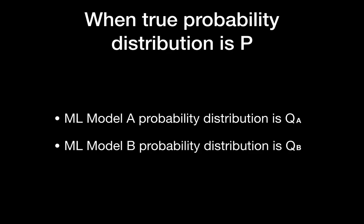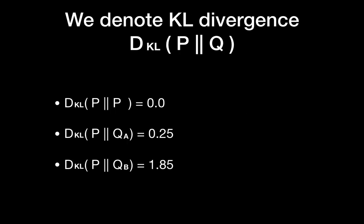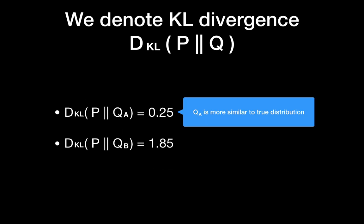Let's denote the true label probability distribution as P and the predictions as Q. So model A's prediction is QA and model B's prediction is QB. KL divergence from P to P is zero since there is no difference between the same probability distribution. You can now see the exact quantitative number for KL divergence from P to QA and KL divergence from P to QB. Since KL divergence from P to QA is less, we can say QA — which is machine learning model A's prediction — is more similar to the true label distribution. Hence, machine learning model A has better prediction.